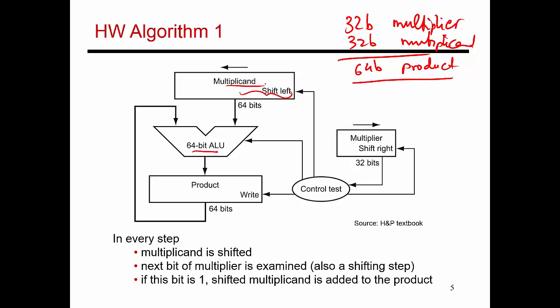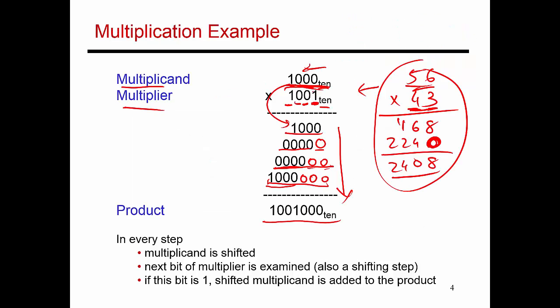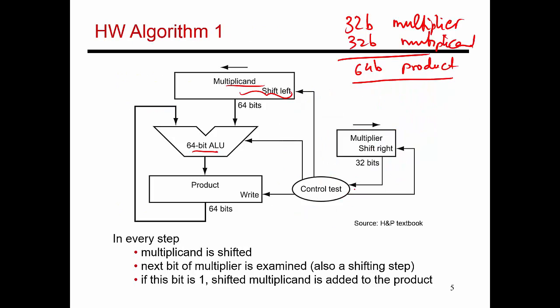And with every single step, there will be 32 steps in this case. What I had over here was just two 4-bit numbers, and so it took only four steps to finish this entire operation. But if I have a 32-bit number, it's going to take me 32 steps. And in those 32 steps, this multiplicand is going to keep shifting to the left. So in the very last step, it's basically going to be multiplicand followed by 32 zeros.